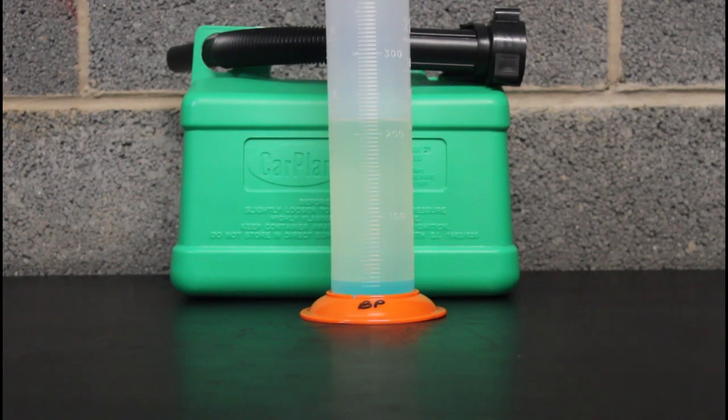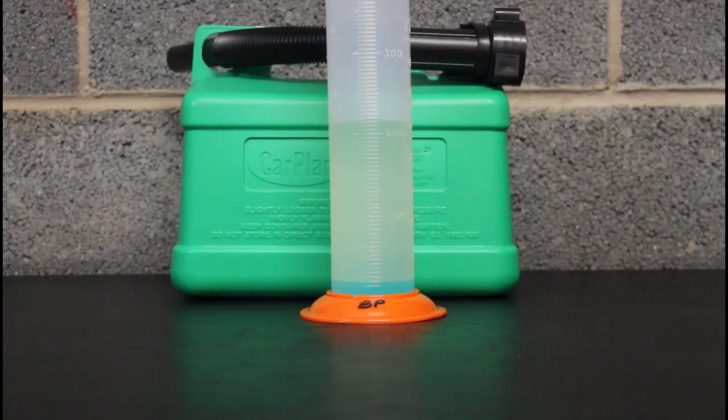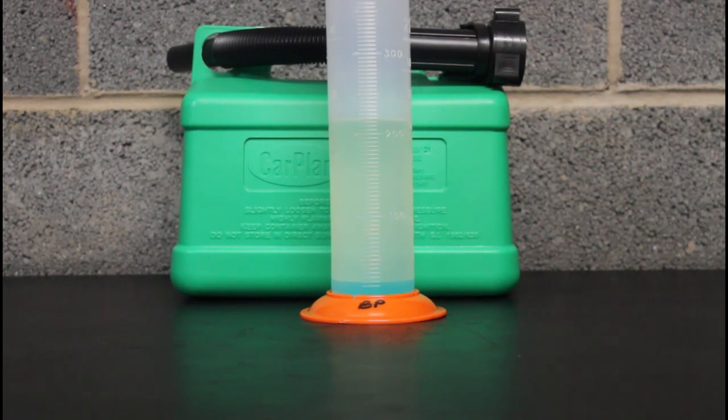Coming in at number two is BP. Now that's a bang on two and a half percent and that's as good as it gets for E10. And that's coming in at 146.9 pence per litre. So well done BP. They seem to be doing some great fuels. It's just a shame that the super unleaded isn't a 99, it's just a 97.